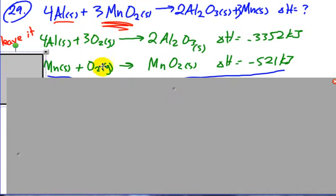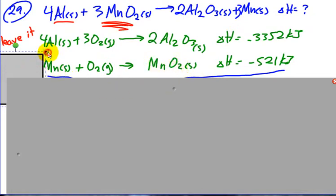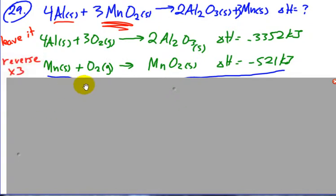Okay, MnO2, there it is there. I need three of them, I only have one of them. So, I'm going to have to multiply it by three, which means multiplying everything by three. And also, this one is on the wrong side. It needs to be on the left-hand side of the arrow as it reacted, but it's on the right-hand side of the reaction as a product. So, I'm going to have to do two things here. Reverse and multiply by three.